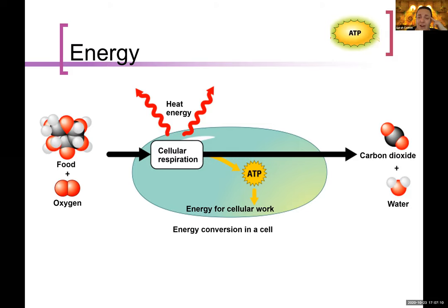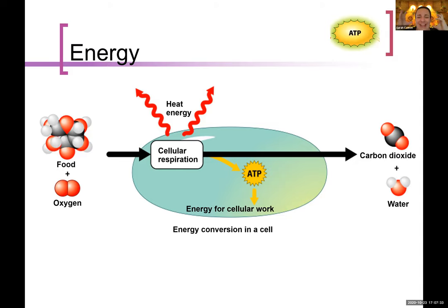The way living things take stored energy and convert it into kinetic energy — energy of motion — is through a process called cellular respiration. The goal of this chapter is to remind us about energy overall, and then talk about the two big ways cells transform energy from one type to another. The first is photosynthesis, the second is cellular respiration. Energy transformation is what we're learning about this week.